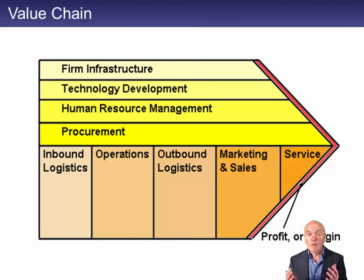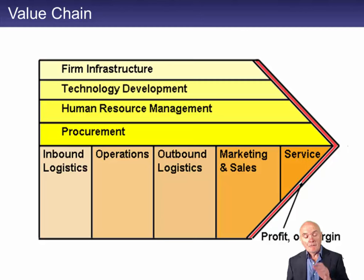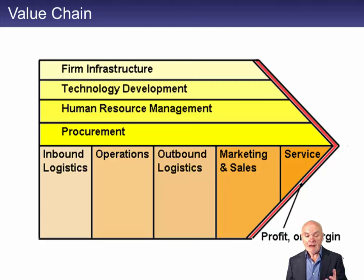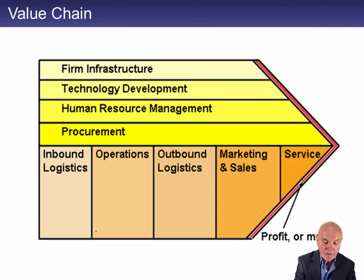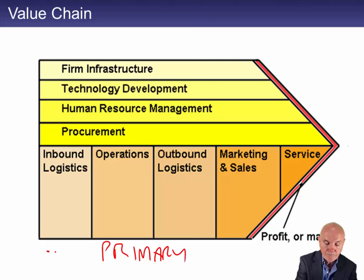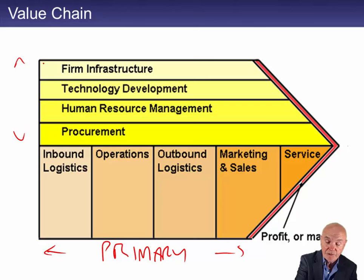This is to do with the internal organisation of the company you're talking about. What Porter said was essentially that the activities of an organisation can be spread over nine different areas. The ones along the bottom starting with inbound logistics are what's known as the primary activities. The ones above could be called secondary but are normally called support activities.